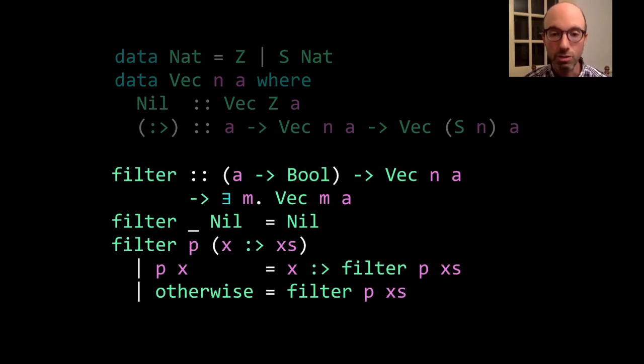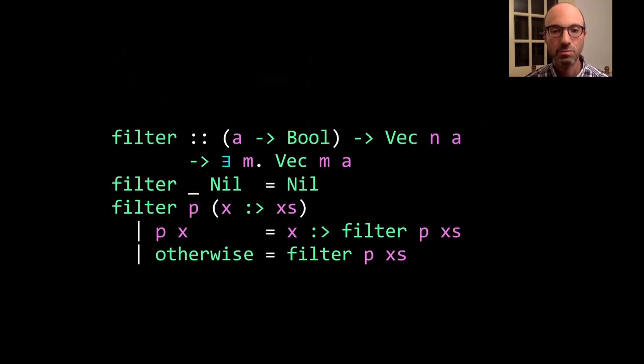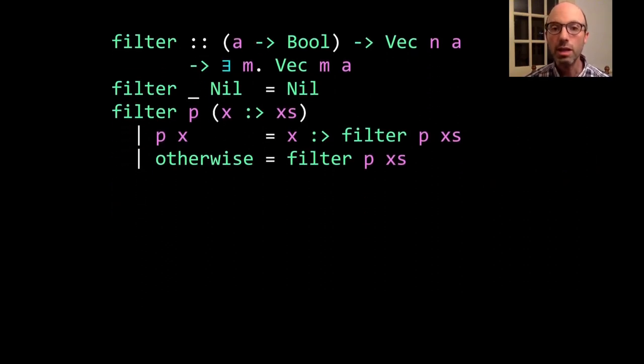Then we can define this filter. This is the same filter type that we saw a few slides ago, but now we have an implementation. What we see in the implementation is that there is no packing or unpacking. Despite the fact that this filter returns an existential, the first line just returns nil. I don't do any fancy footwork there. And then the recursive call to filter, again, I don't have to use any fancy footwork. The approach that we describe in our paper accepts this definition.